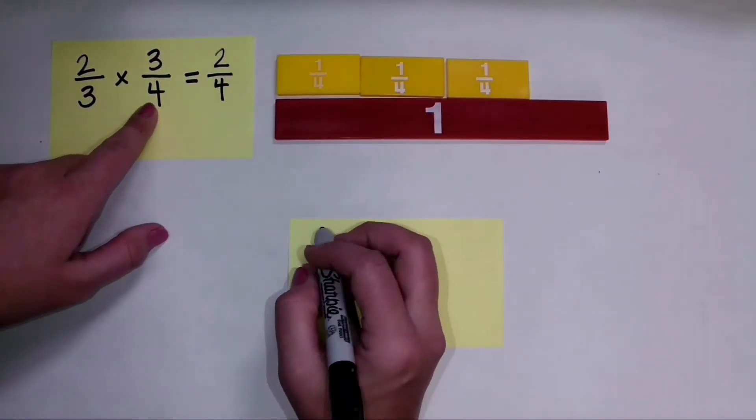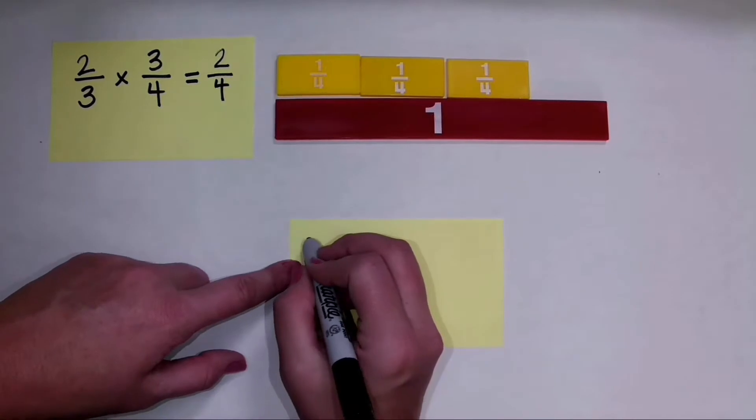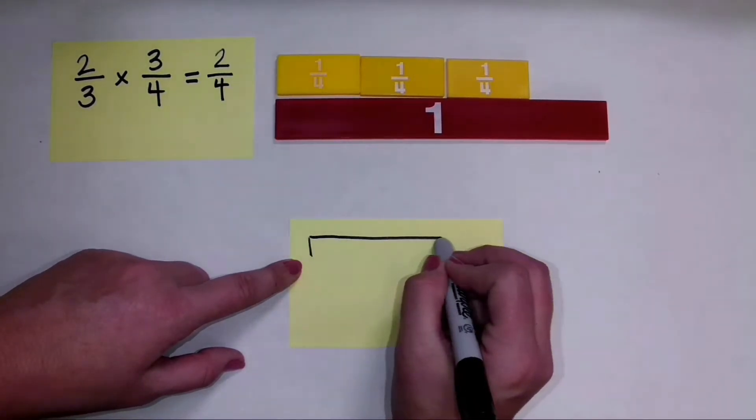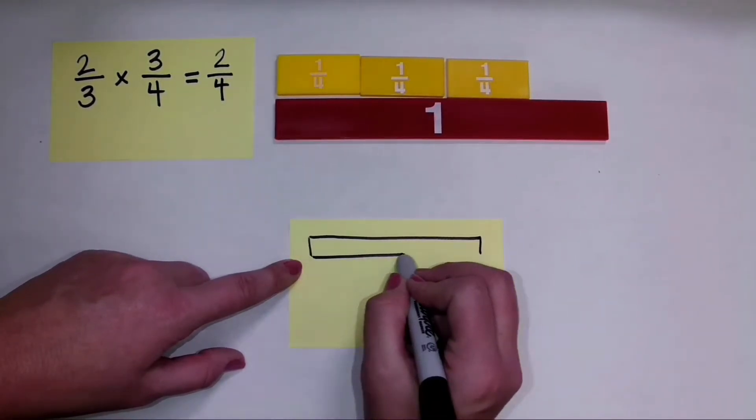So remember, I'm going to multiply 2 thirds times 3 fourths. And so I am going to show, and kind of imagine these are my fraction tiles here.